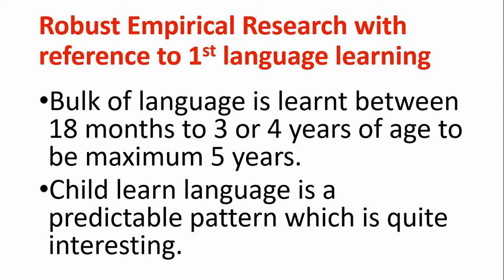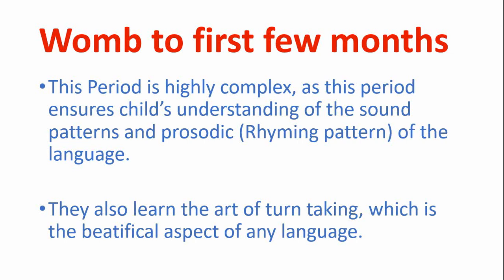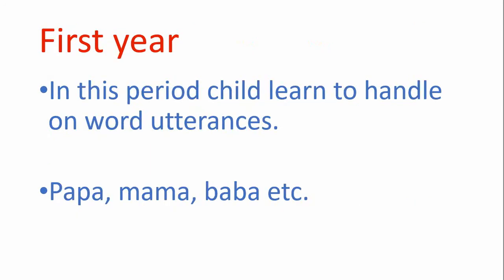There is a timeline for how children learn language. From the womb to the first few months, this period is highly significant. It ensures the child's understanding of the sound patterns and prosodic and rhyming patterns of the language — the rhythm and scheme of the language. Remarkably, the child is learning even while in the womb of the mother. Children also learn the art of turn-taking during this period — waiting for your turn and then speaking up. It is quite amazing.